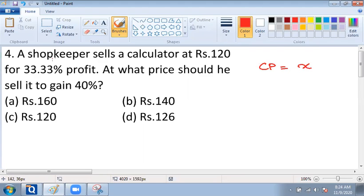It is given in the question that the shopkeeper sells a calculator for rupees 120 and there the shopkeeper enjoys 33.33% profit.